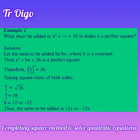Therefore b divided by 2 is equal to positive or negative 6. Making b the subject, b equals 12 or negative 12. Therefore the term that must be added is either 12x or negative 12x.